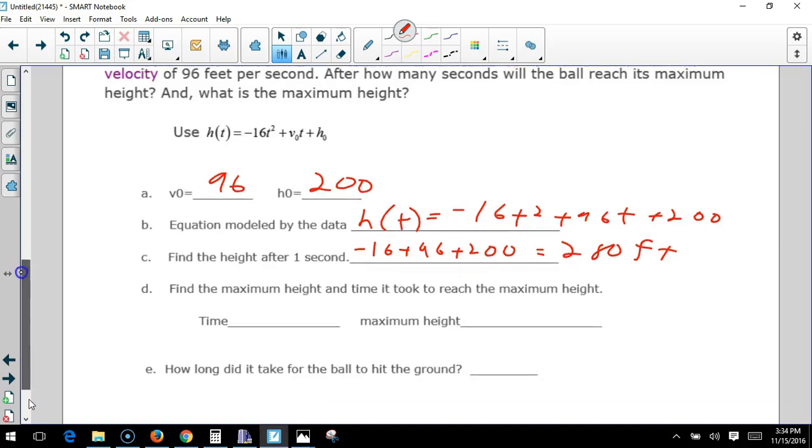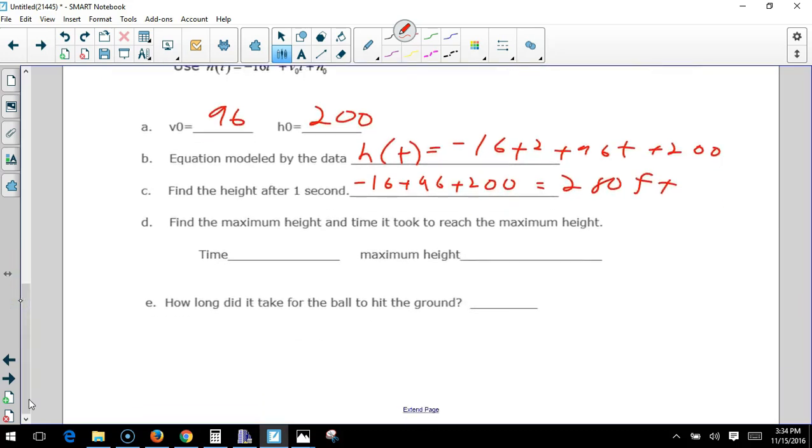Maximum height? For maximum height we have to do ABC: negative 16, 96. x equals the opposite of B over 2A. So that's negative 96 over negative 32, which is positive 3, so that's 3 seconds. Then we look at our table and at 3 seconds it's 344 feet, the highest point.